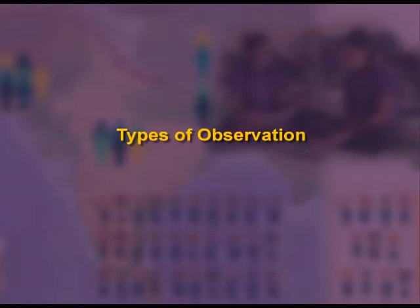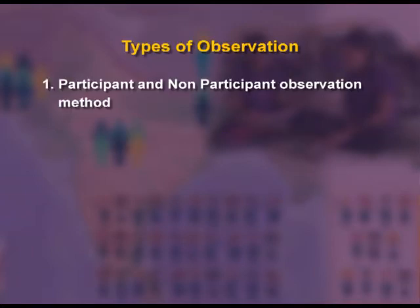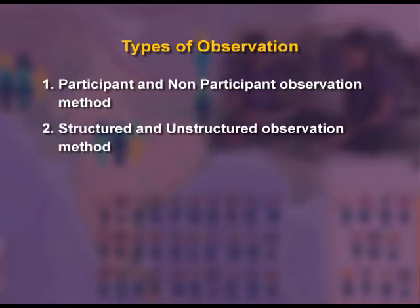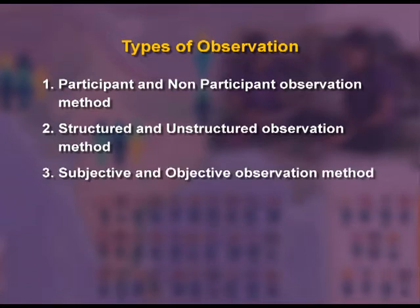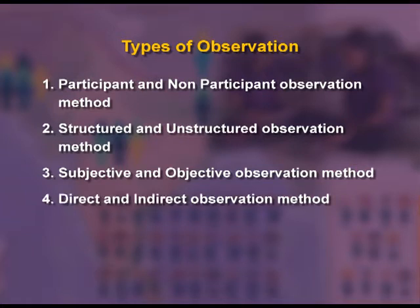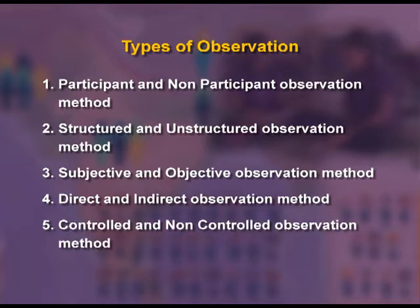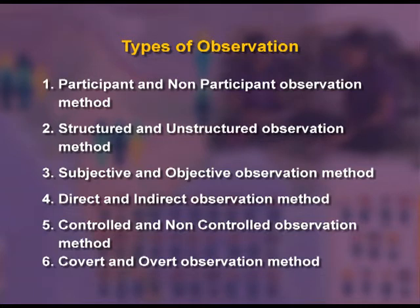Types of observation: First, participant and non-participant observation method. Second, structured and unstructured observation. Third, subjective and objective observation method. Fourth, direct and indirect observation method. Fifth, controlled and non-controlled observation method. Sixth, covert and overt observation method.